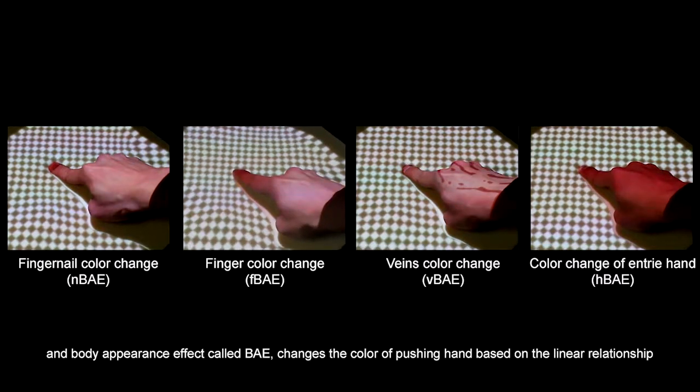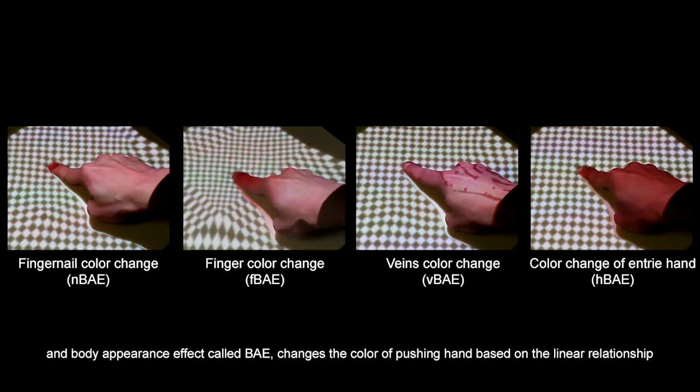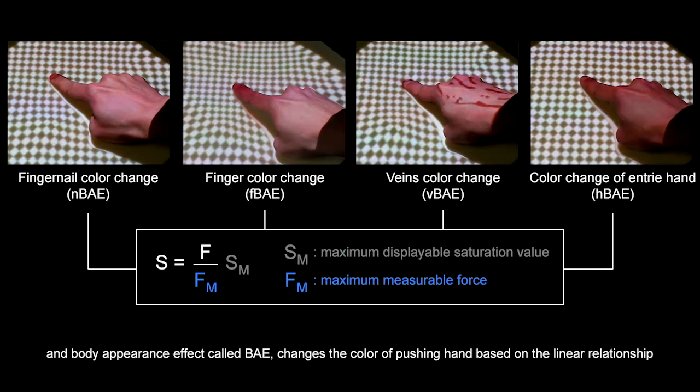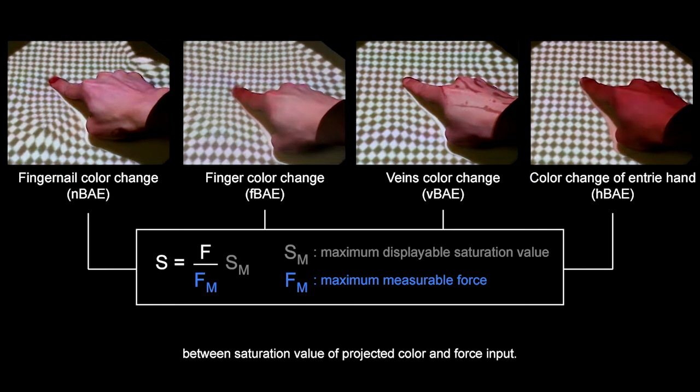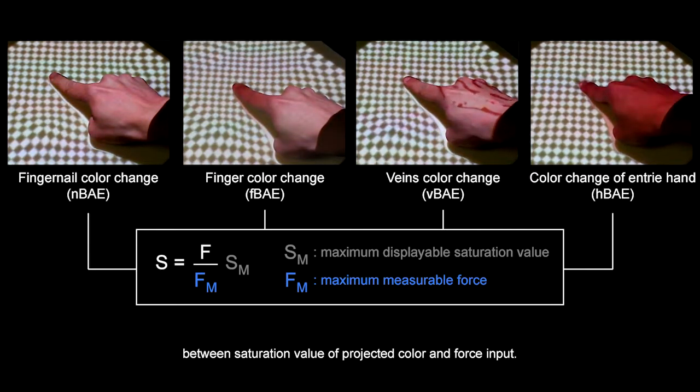Body appearance effect, called BAE, changes the color of the pushing hand based on the linear relationship between saturation value of projected color and force input.